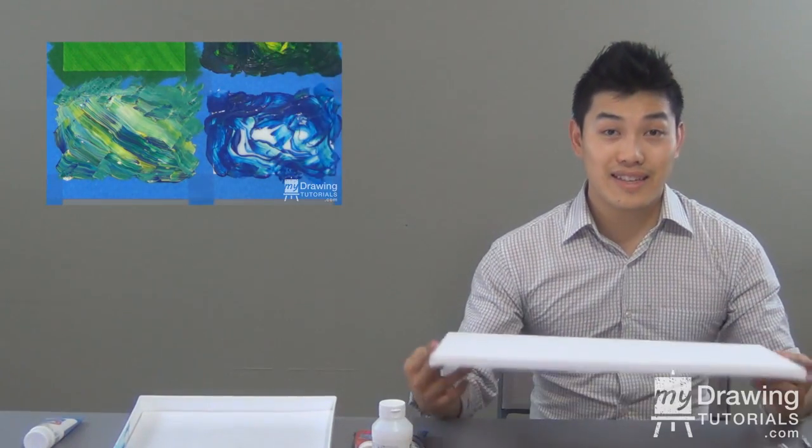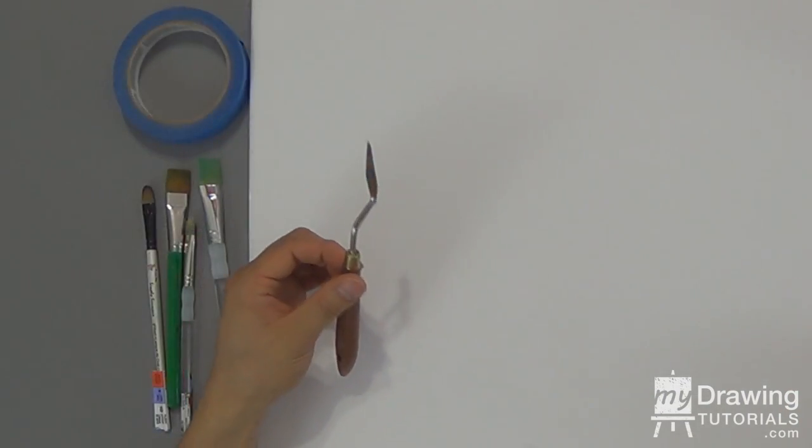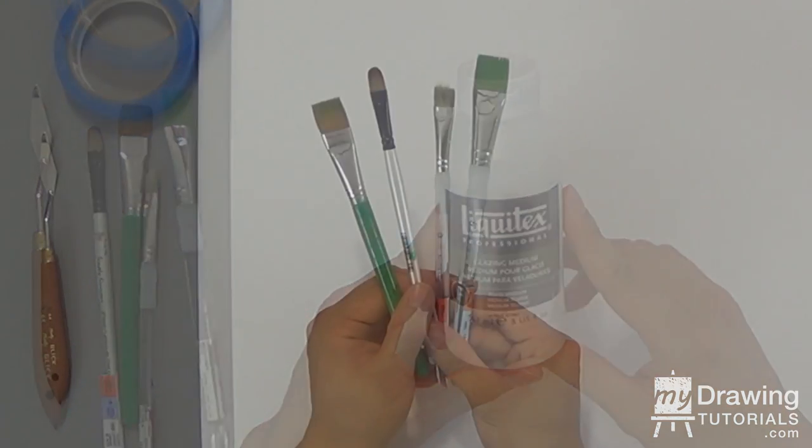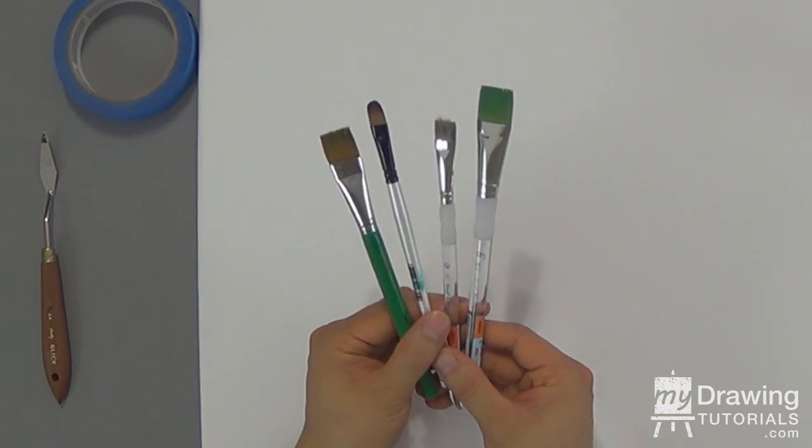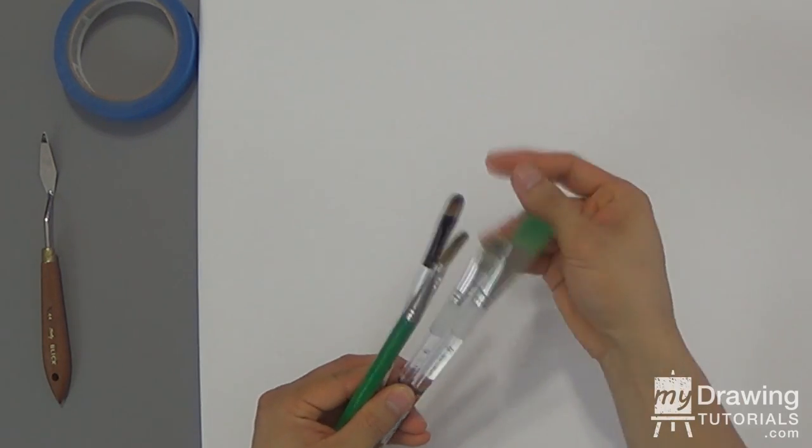For this painting, we're going to be using a 16x20 canvas, some painter's tape, a palette knife, blue and red acrylic paint, some acrylic glazing medium, and also have a few clean brushes at the ready. It's not really important what kind of brush they are, as long as you can use it to blend.